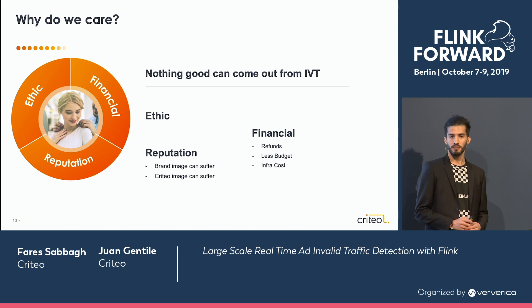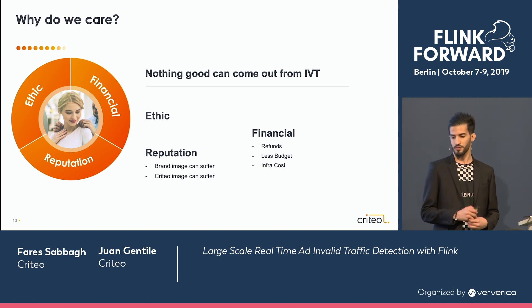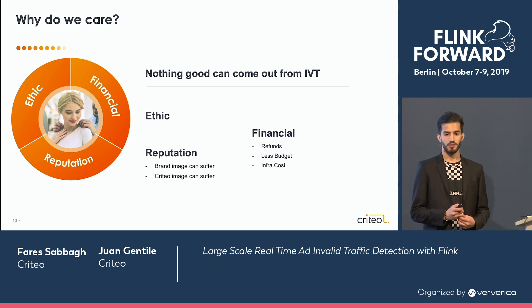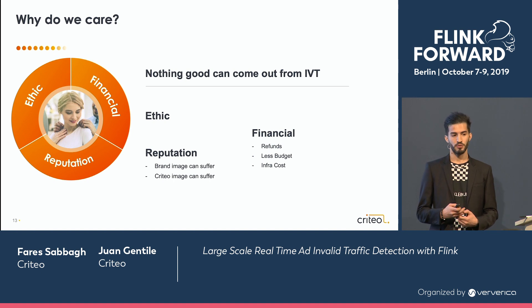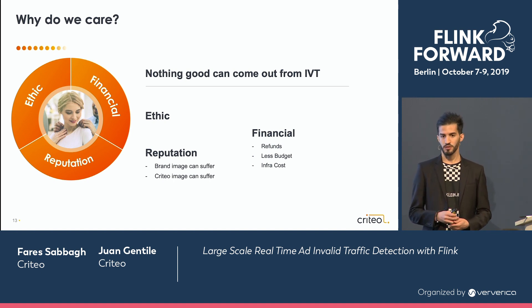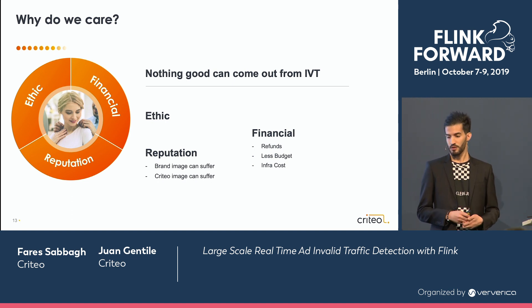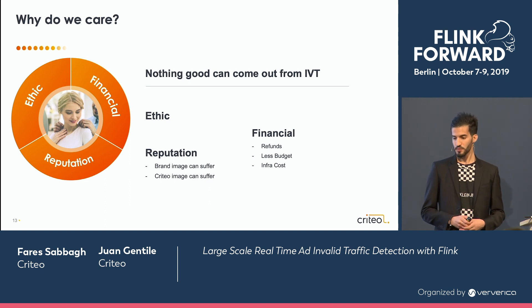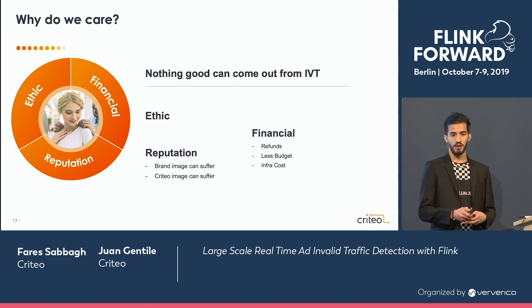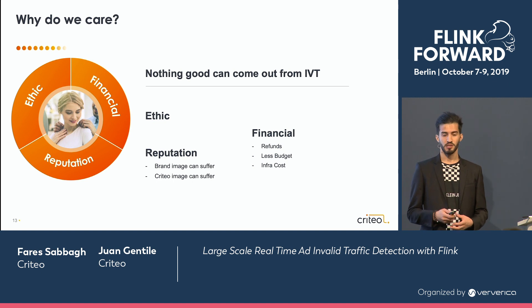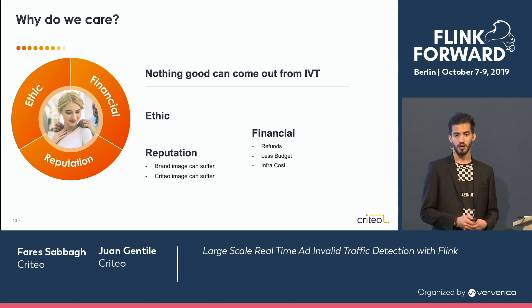Criteo is not directly impacted by invalid traffic, so you may wonder why we care. First reason is ethics — we don't want to put ads in front of robots. Then there is reputation: if people are seeing ads on fake publisher websites, they may wonder what Criteo is doing with those publishers, whether Criteo is part of this scheme. And the last one is financial impact. If an advertiser finds out that it has IVT, we will have to give them refunds. Advertisers, if they find a lot of IVT, will tend to spend their budget in other media such as TV or print. And last but not least, it's the infra cost — invalid traffic costs a lot in our infrastructure.